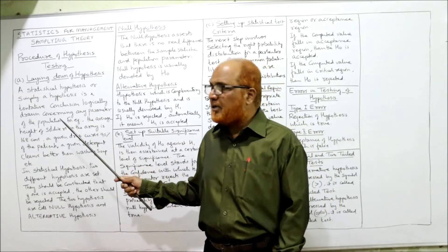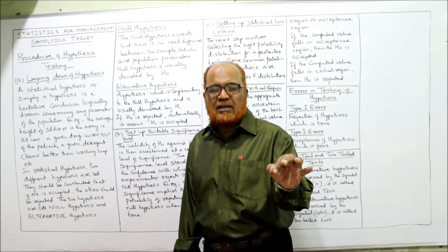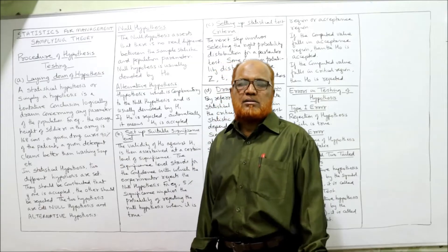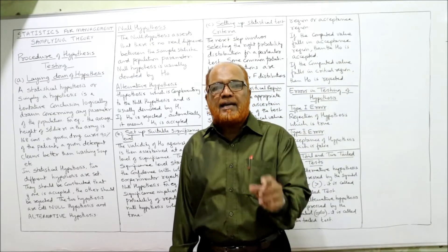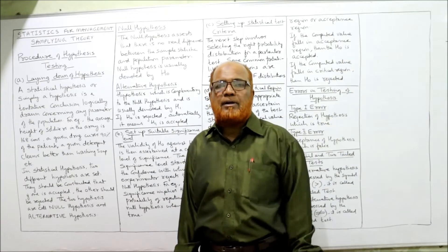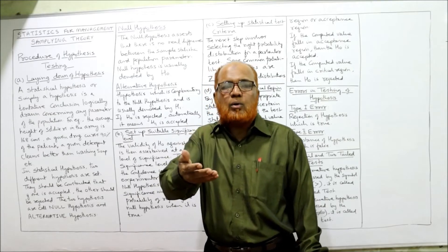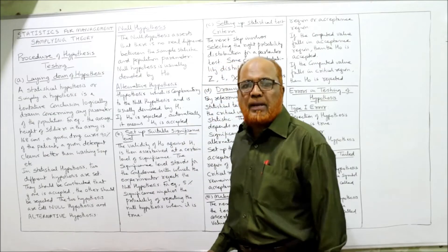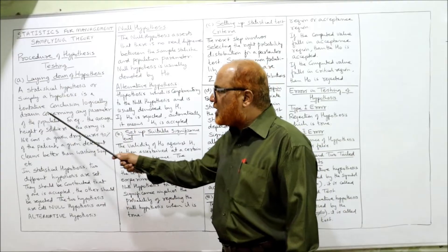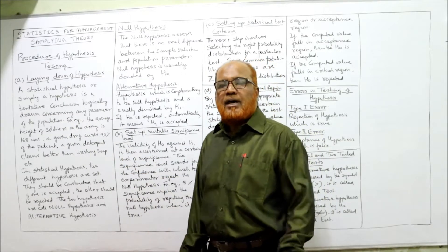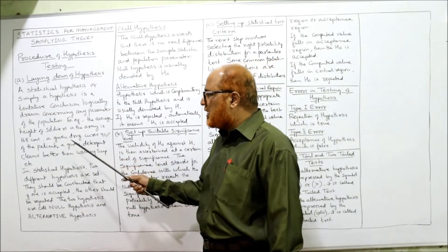The first step is laying down of hypothesis. In hypothesis testing, the first step is to lay down the hypothesis. Hypothesis means a tentative conclusion about some population parameter. A statistical hypothesis is a tentative conclusion logically drawn concerning any parameter of the population. For example, before conducting the test we may conclude that the average height of soldiers in the army is 168 centimeters.